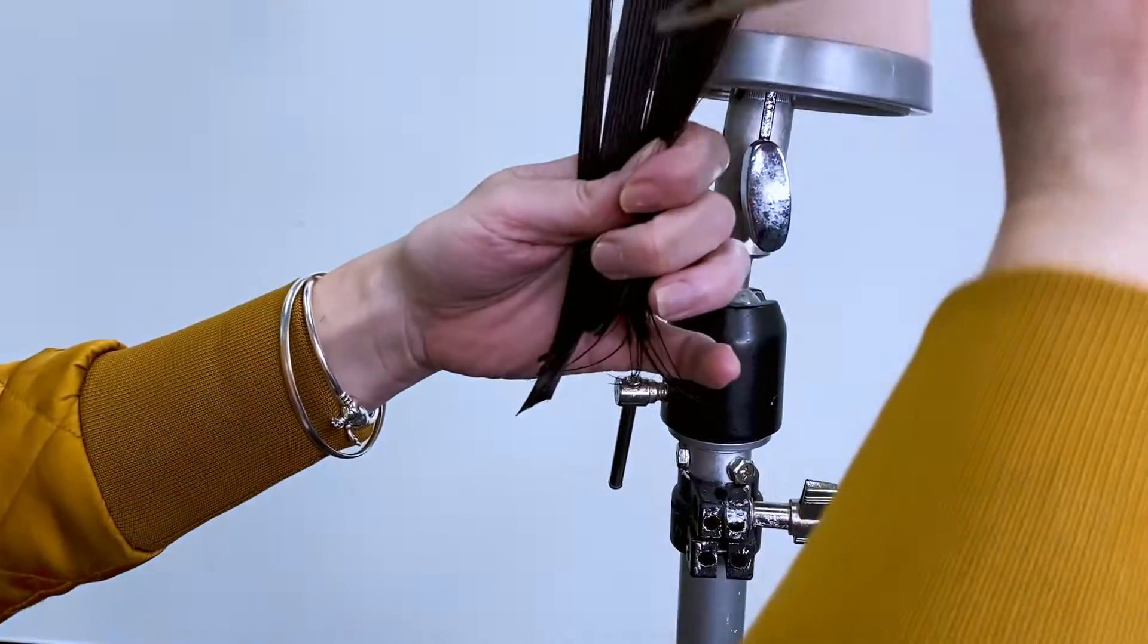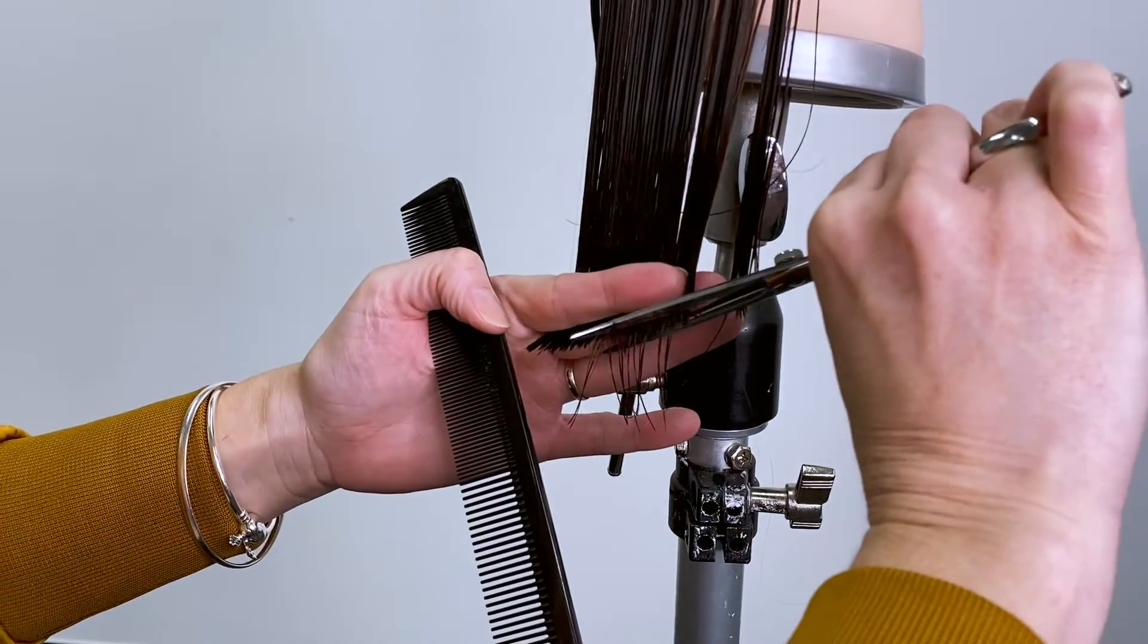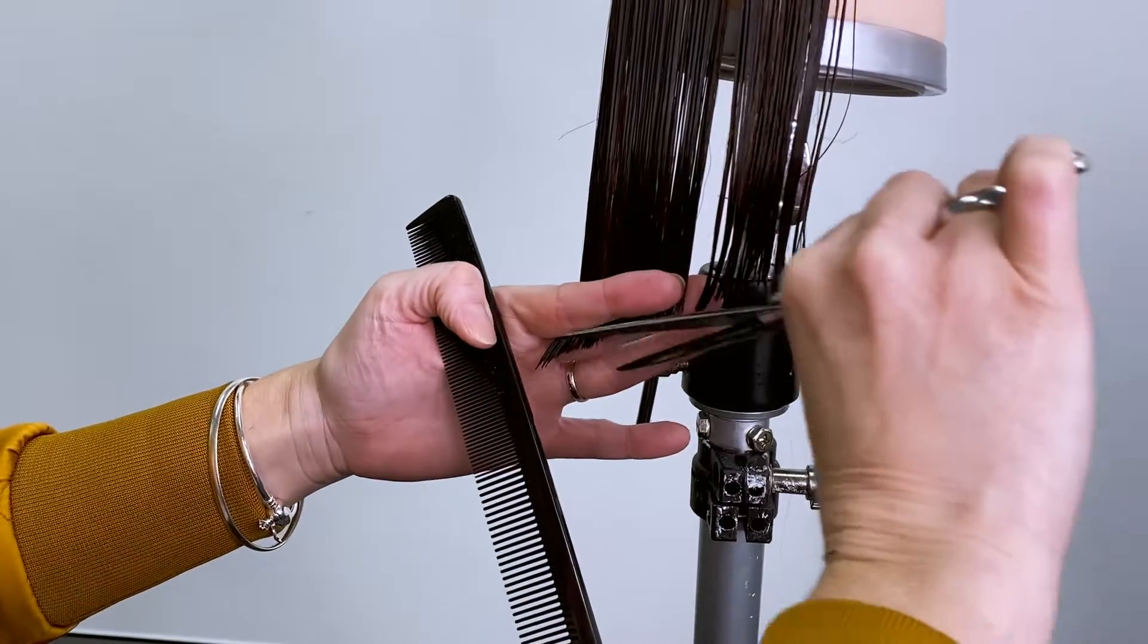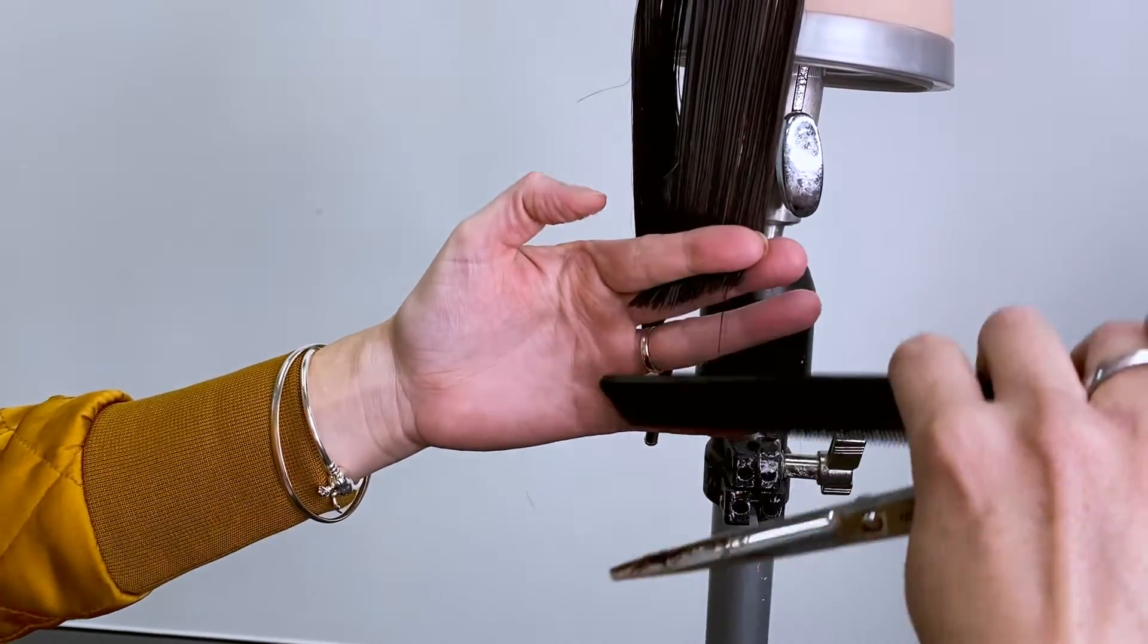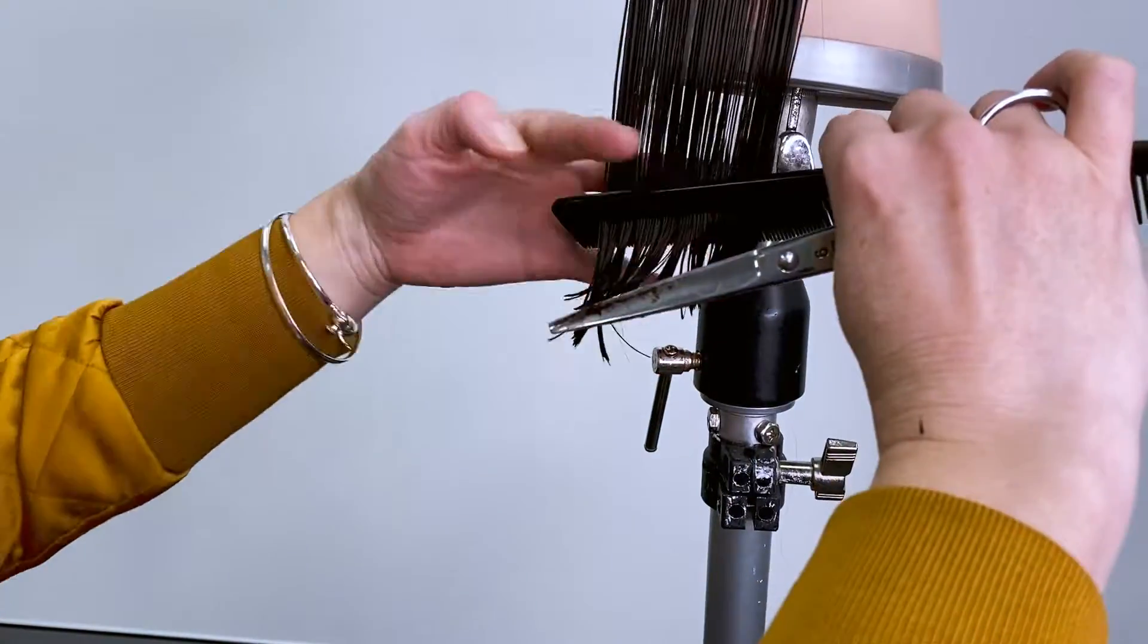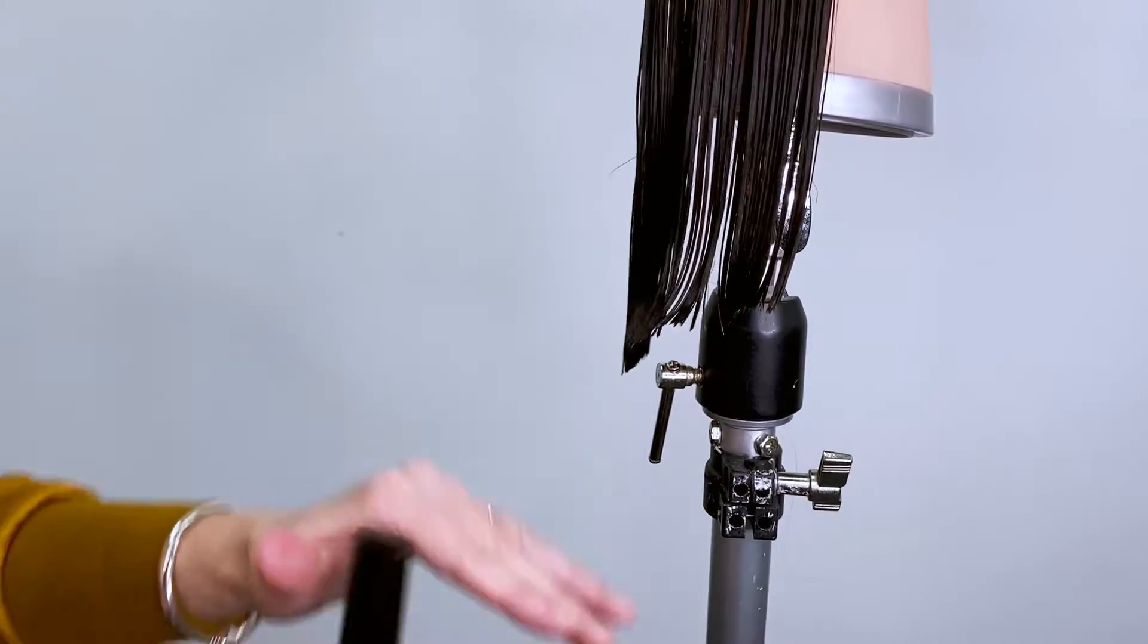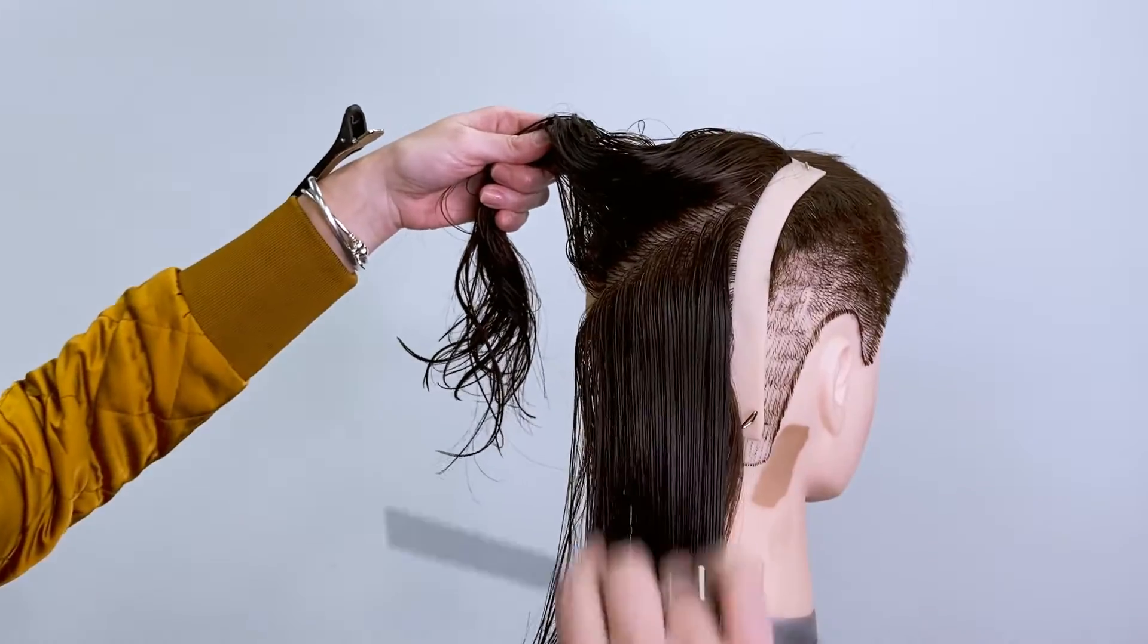The only tip I can tell you is don't cut into your guide. If you can't see your guide, go back and section up again. If you still can't see it, then grab help. Don't just cut. And that's pretty much our diagonal. You would just keep going through. Everything's just repeated, the same process, just on a different line.